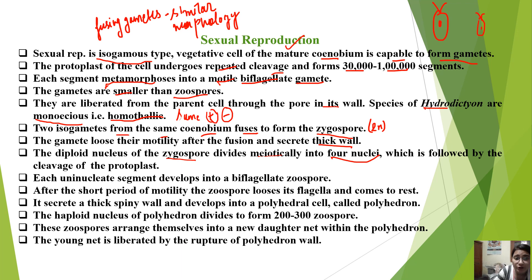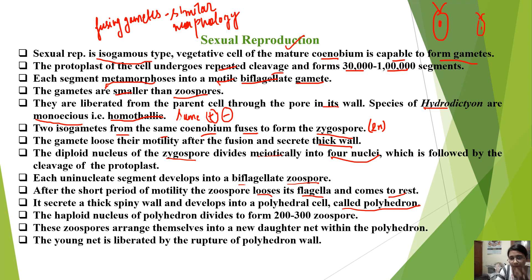Each uninucleate segment develops into a biflagellated zoospore. After a short period of motility, the zoospore loses its flagella and comes to rest. It secretes a thick spiny wall and develops into a polyhedral cell called a polyhedron. The zygospore divides to form four nuclei, followed by cleavage of the protoplasm, and each segment converts into a biflagellate zoospore.